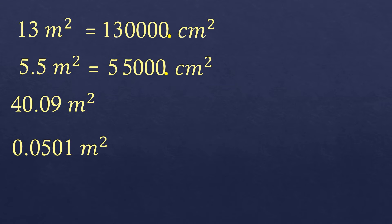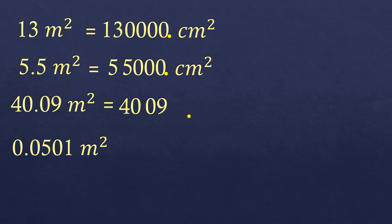Next, we have 40.09 square meters. Let's convert this into square centimeters. We move the decimal point four times to the right — one, two, three, four — and fill in any empty spaces with zeros. So 40.09 square meters equals 400,900 square centimeters.